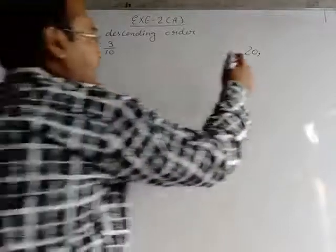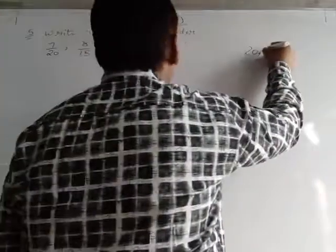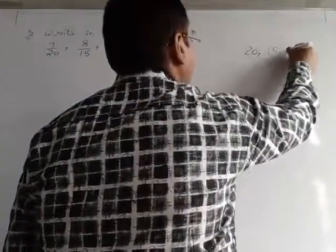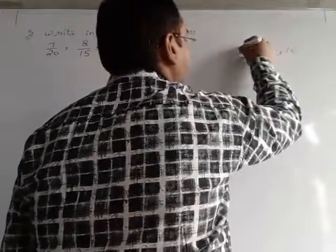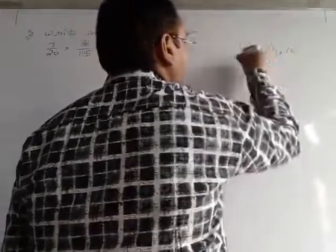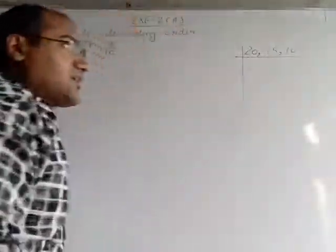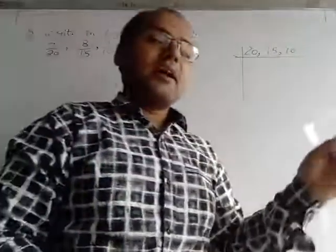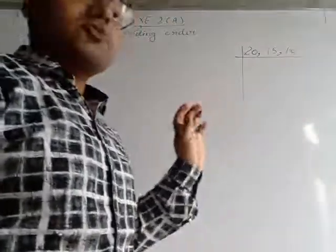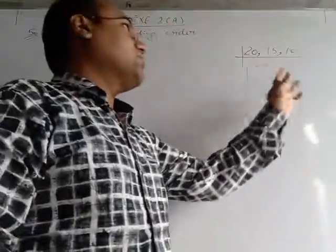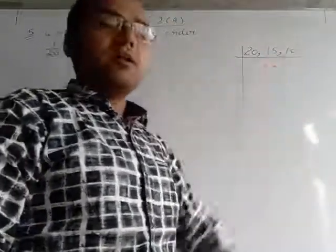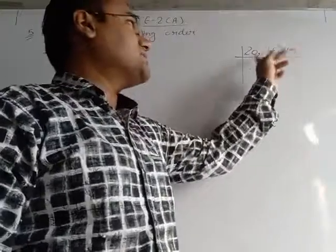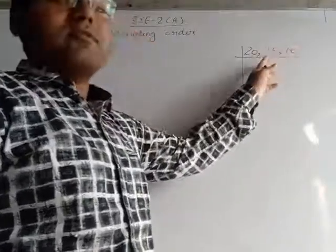So we will find the LCM of 20, 15 and 10 with the help of division method. In the prime factor method, we have to solve them separately and it will take a lot of time. So in order to save that time, we will use the division method. Together we will write them in a single step.